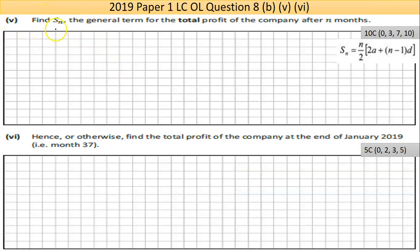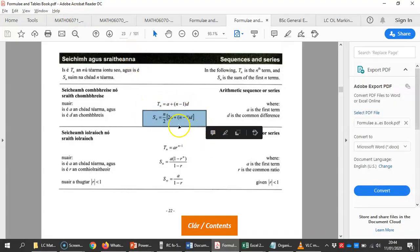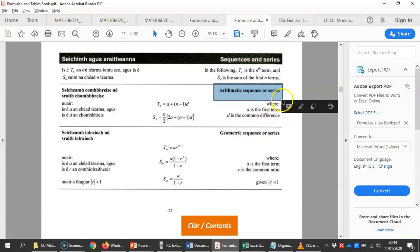Now part five says find S_n, the general term for the total profit of the company after n months. Now that sounds very difficult, but in a sense you don't really need to know what all this means. You just have to realize that I've been using a formula from the maths tables. Let's go and see if there's a useful formula for me. The question says S_n and you suddenly have this thing in the formula book called S_n. So go with it. Now, two different types of sequences. The basic difference is an arithmetic sequence is linear, it goes up by a constant amount. The geometric sequence goes up by a ratio. The arithmetic is what I would be expecting more often.